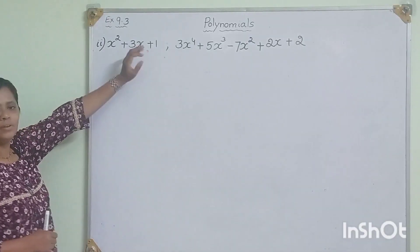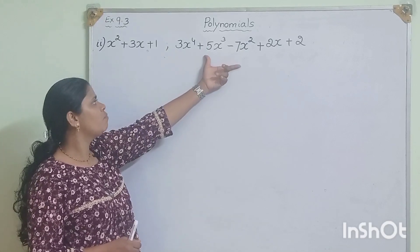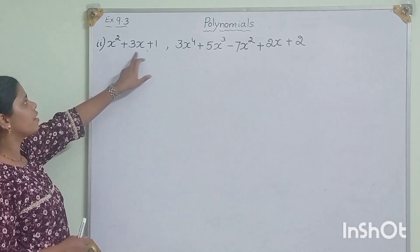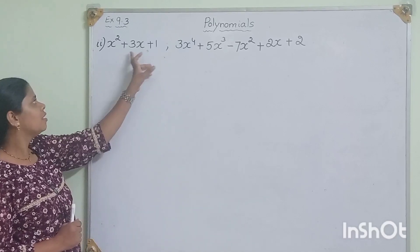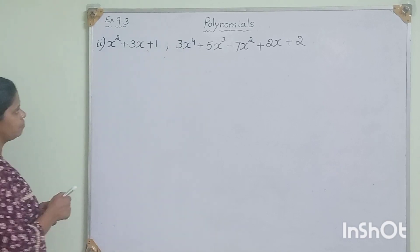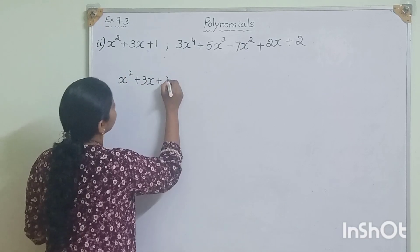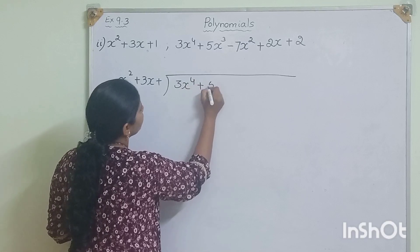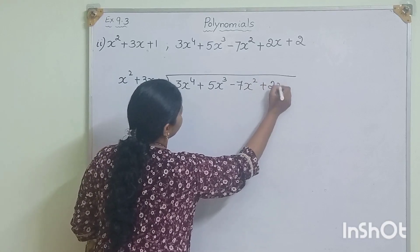Now let us do the second problem. This is our second polynomial and this is our first polynomial. We have to divide the second polynomial by the first polynomial and check whether the first polynomial is a factor. So: x squared plus 3x plus 1 divides 3x to the power of 4 plus 5x cubed minus 7x squared plus 2x plus 2.